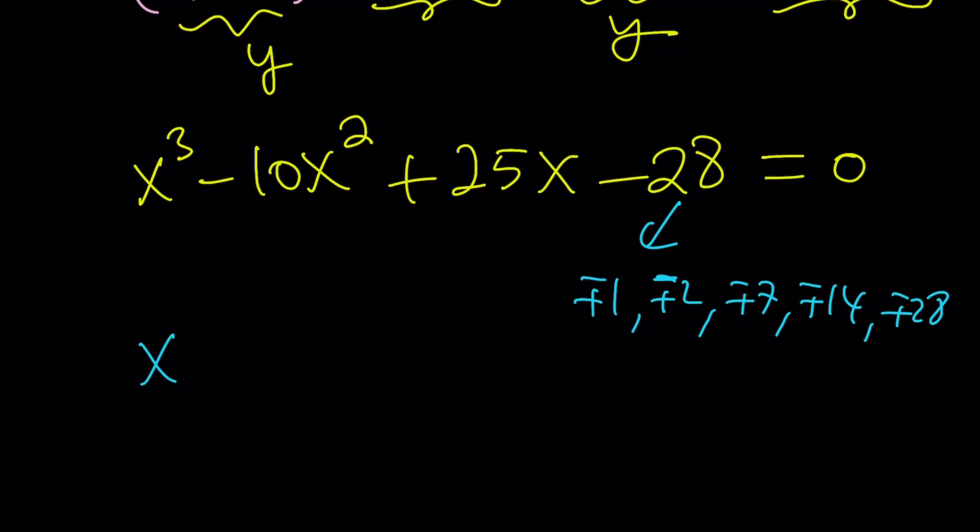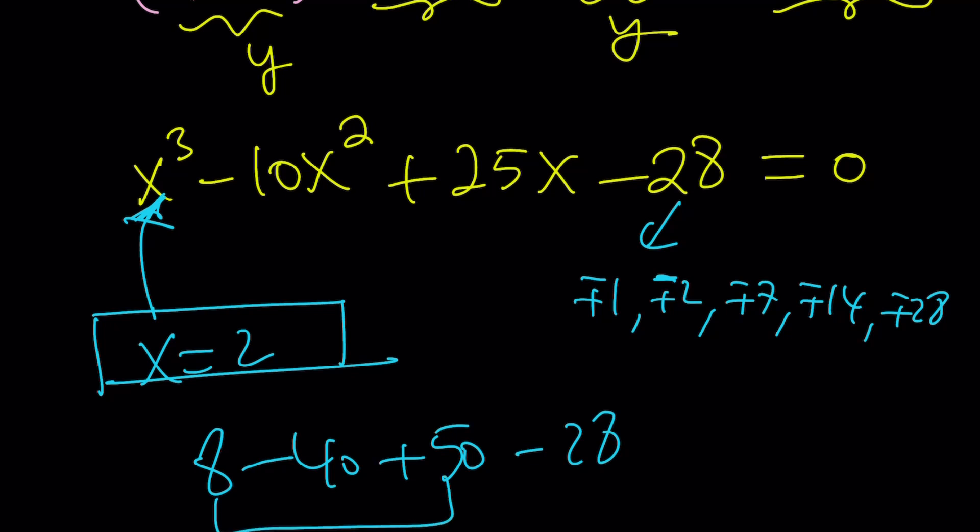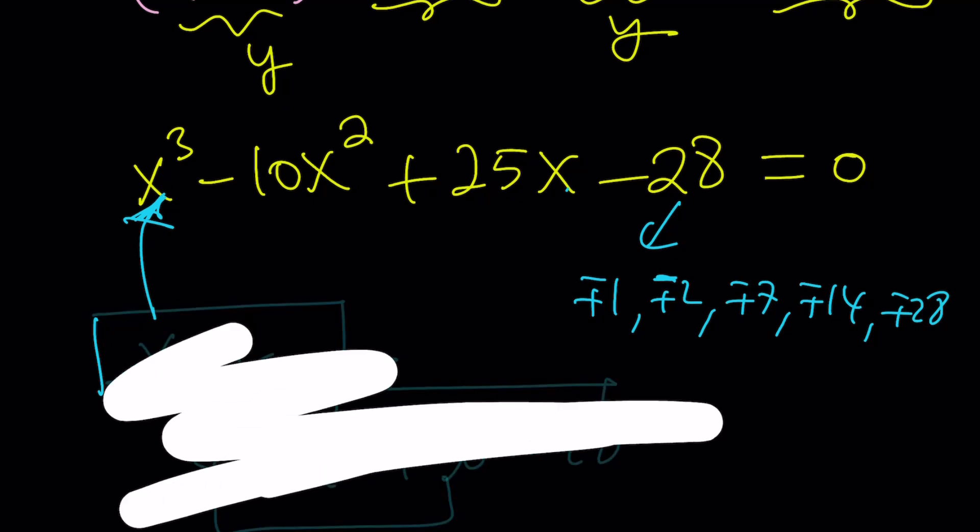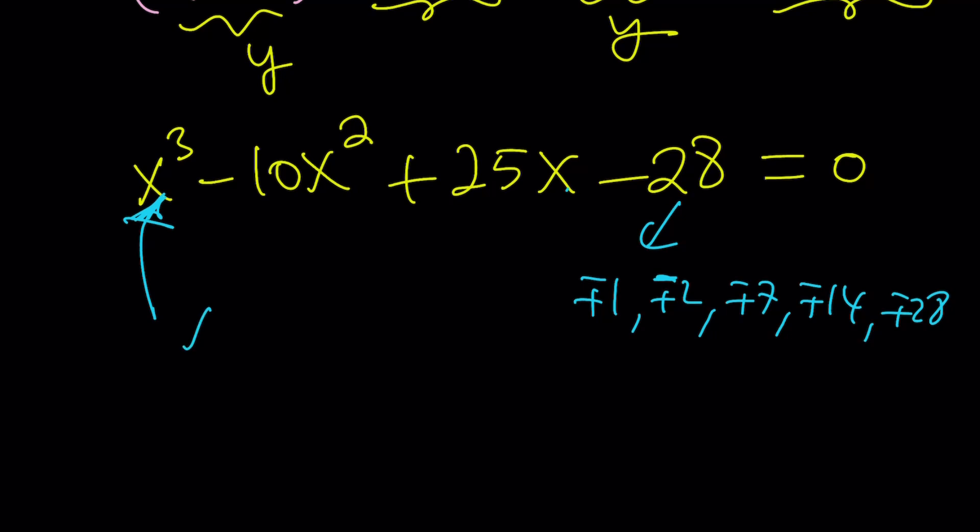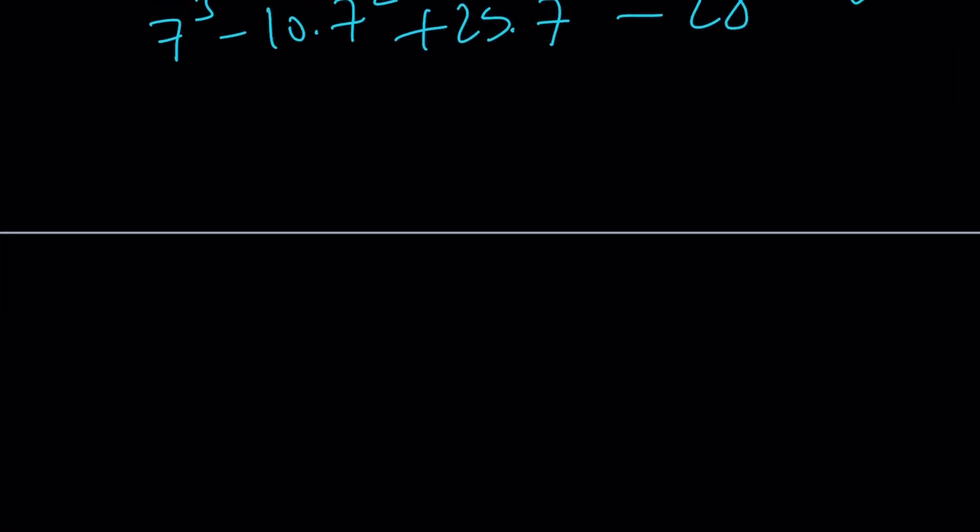That integer solution is going to be x equals 2, and you can easily verify that. Actually, this is not the solution. Never mind. x equals 2 is not the solution, x equals 7 is the solution. Let's test it out: 7 cubed minus 10 times 7 squared plus 25 times 7 minus 28. You can do that verification. I'm just going to skip through this for the sake of time and look at the second method.